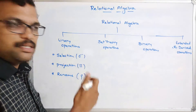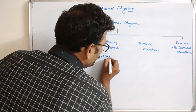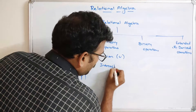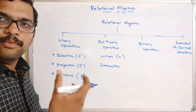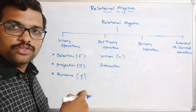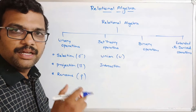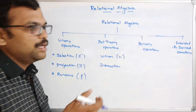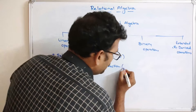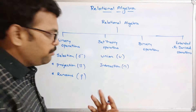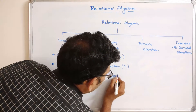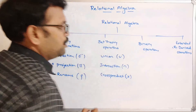For set theory operations, you may already be familiar with these concepts. They include union and intersection operations. Union combines all data from two tables, while intersection gives the common elements from two tables. Also included is cross product. Set theory operations are a type of binary operation because they are applied on two different relations.